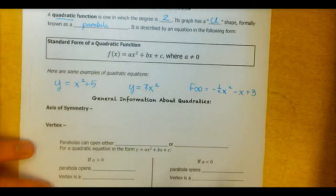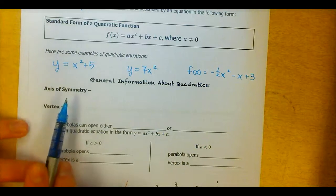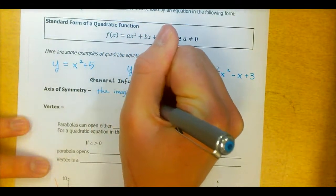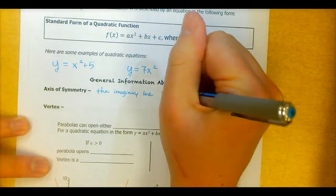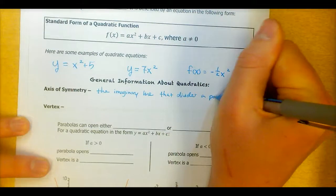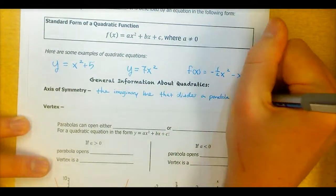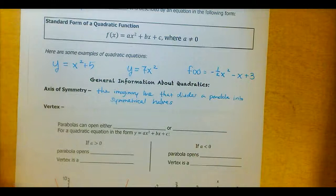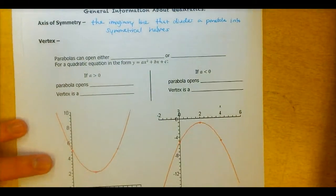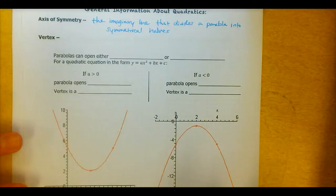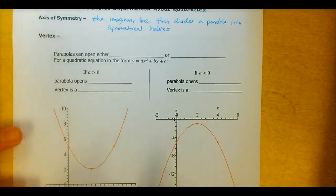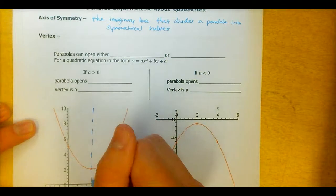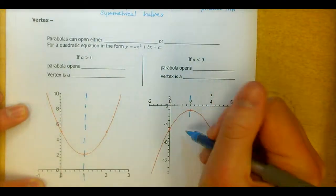Some general information about quadratics — another couple of terms I want you to know. The first is what's called the axis of symmetry. This is the imaginary line that divides a parabola into symmetrical halves. Parabolas have symmetry, meaning if we fold them over that imaginary vertical line, they're going to be identical. For these two graphs of parabolas, the axis of symmetry would be these imaginary dashed lines going right down the middle of each parabola.